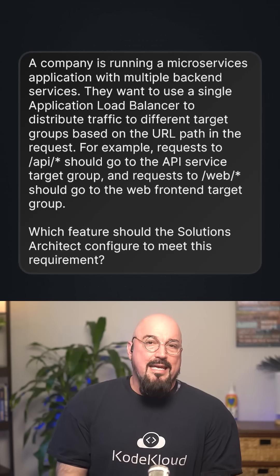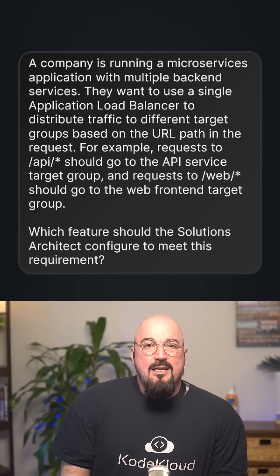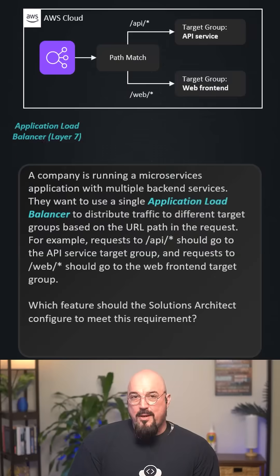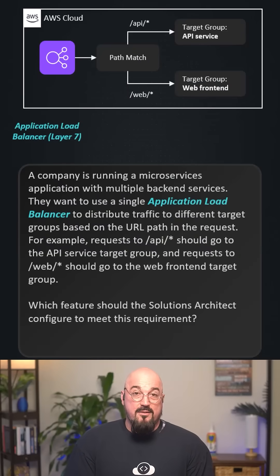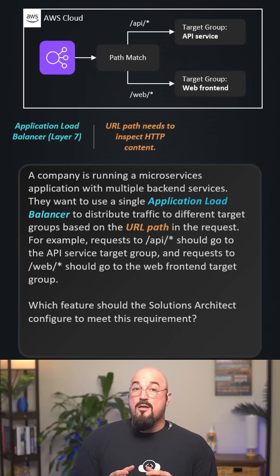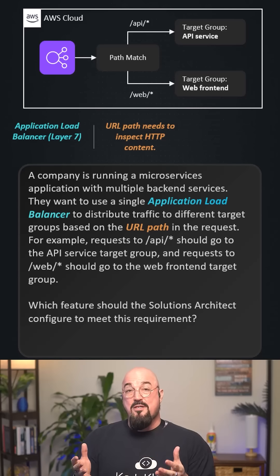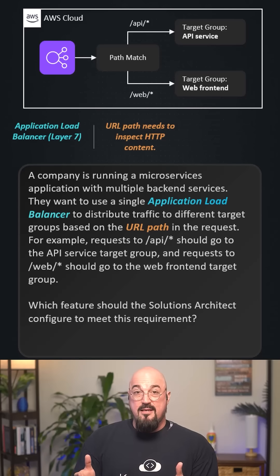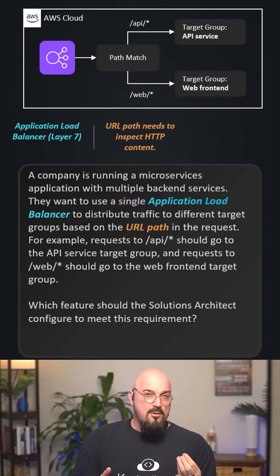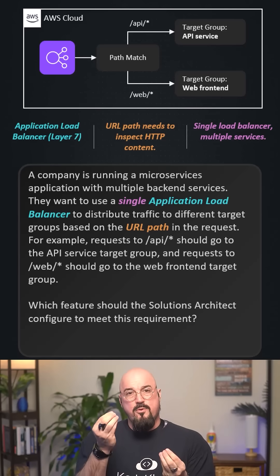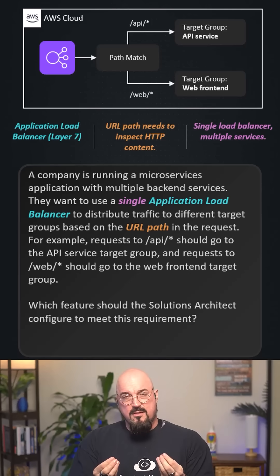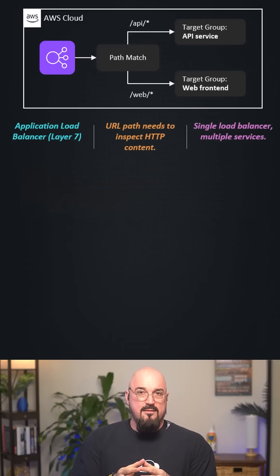Let's identify the key hints. Application load balancer — this is a layer seven load balancer. Route based on URL path, so we need to be able to inspect the HTTP content. And a single load balancer that supports multiple services. These are our hints.